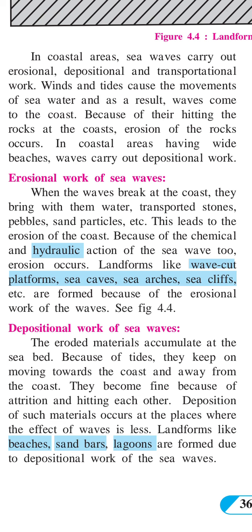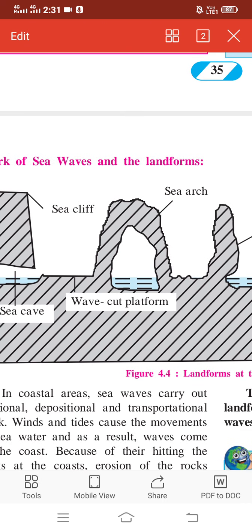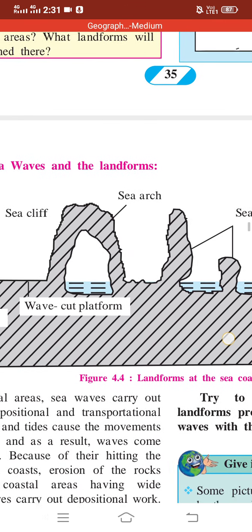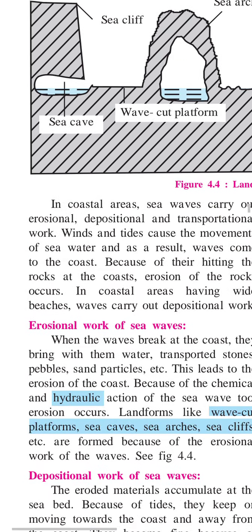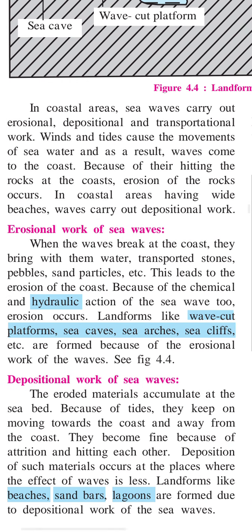Land forms like wave-cut platforms, sea caves, sea arches, sea cliffs, and sea stacks are found because of the erosional work of waves. You can see here a sea cliff and sea cave — waves hit continuously, creating a cave. This region is a cliff, this is a sea cave, and an arch forms in the shape of an arch due to the erosional work of sea waves.